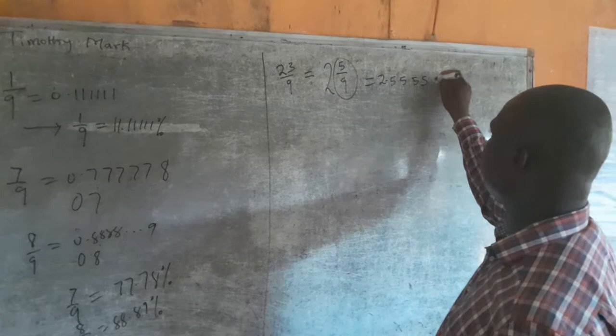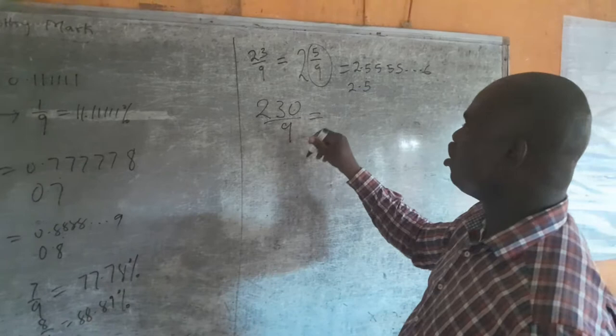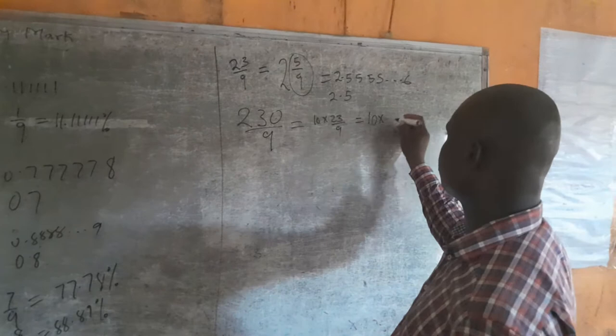So if I have 230 all over 9, you should understand that 230 is 10 times 23/9. So that is written as 10 times 23/9, which means 10 times the result of 23/9.